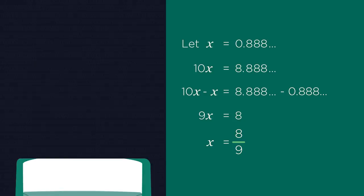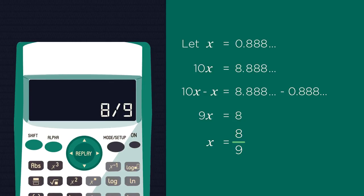We can check that on our calculator. 8 divided by 9 equals 0.888 recurring. So we know we're right.